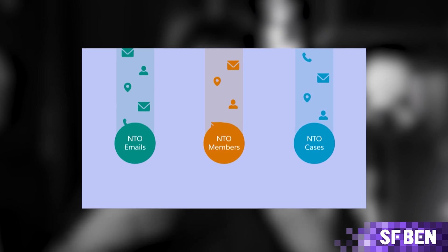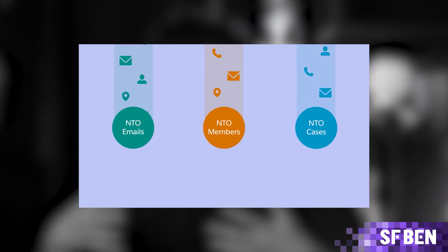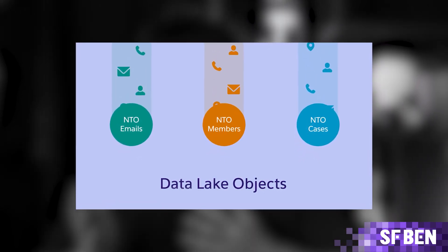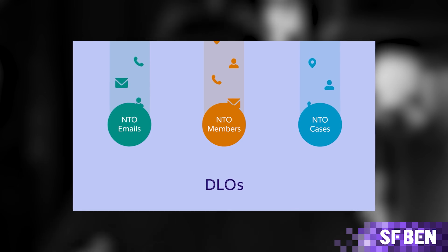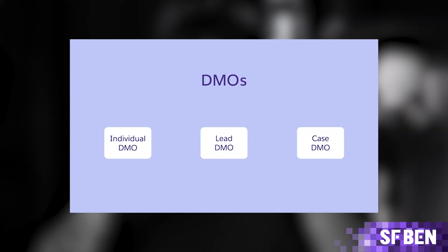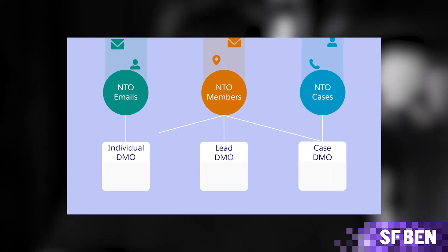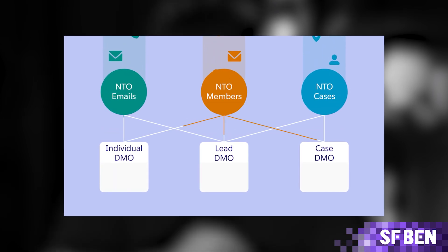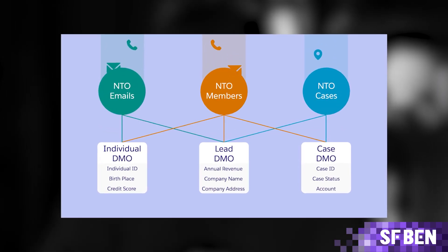Datacloud's data model consists first of data lake objects, or DLOs. These are the staging place for each connected data source. DLO data can be transformed or just mapped to data model objects, or DMOs. DMOs are great because they can store and reconcile data that is semantically identical from many different data sources. Think of your customer — they live in Salesforce and potentially dozens of other systems, but the Datacloud DMO for contact can become the central storage point across all of those systems.